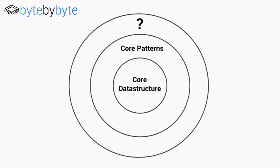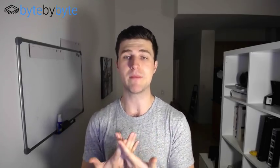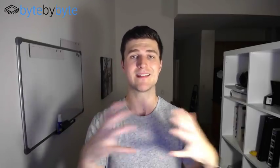Finally we move out to the outermost ring, which is where we start to get into the compound algorithms. These are algorithms that are composed of two or more core patterns — two or more of these basic pieces combining together to make something more complicated. This is where all or most of the questions that you're going to get asked in your interview are actually going to lie. They're all going to be in this outer circle where really all we're doing to solve the problems is combining multiple different patterns. If we understand the patterns and we understand how to combine them, it's basically like a puzzle.